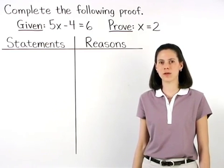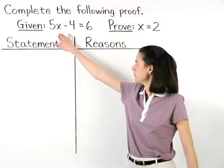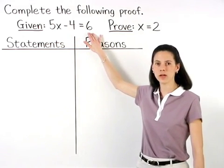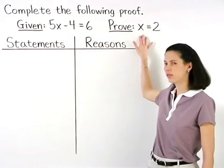In this problem, we're given that 5x minus 4 equals 6, and we're asked to prove that x equals 2.